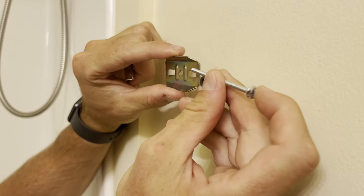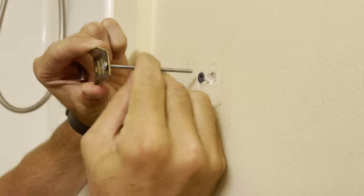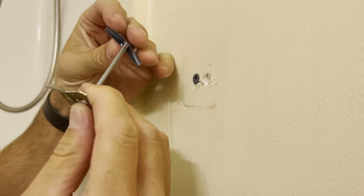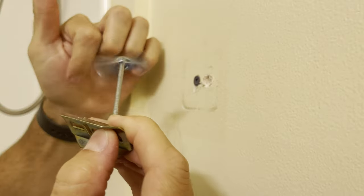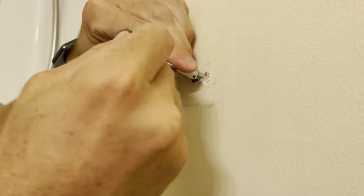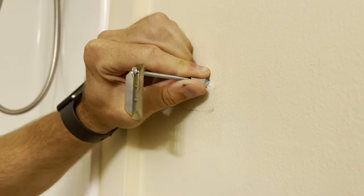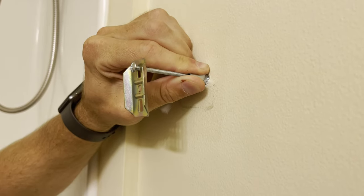Then you'll put your toggle bolt through the bracket and put the back of it on. And then this will have to go through that hole. You might have to kind of tap it in with a hammer or the back of a screwdriver.